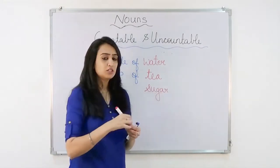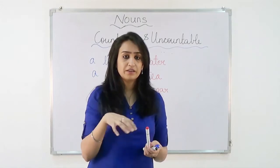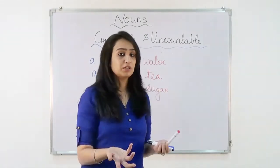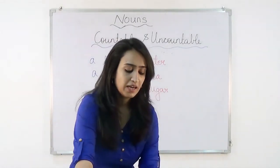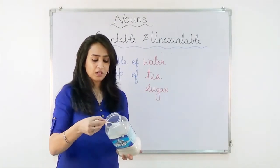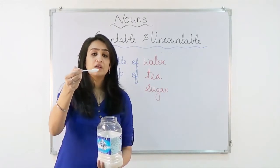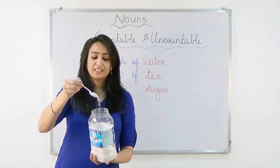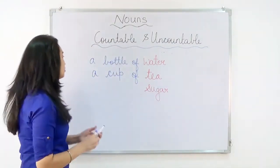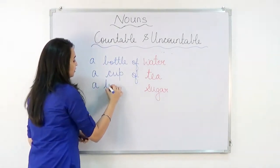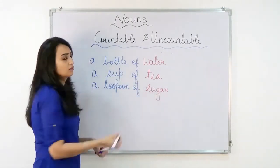Next, sugar. Sugar is so tiny — tiny little particles all here and there. It's very difficult to count sugar. But if I want sugar, what do I say? I will tell them a tablespoon of sugar. That is how I will measure. So I will say a teaspoon of sugar.